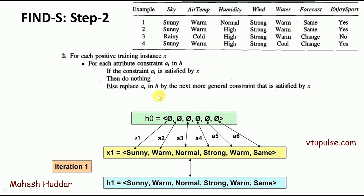In the second step, for each positive training instance x, we consider only the positive instances. In this example, there are 3 positive instances and one negative instance. We repeat this step until we get the final hypothesis.